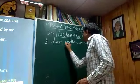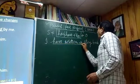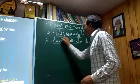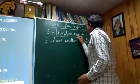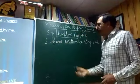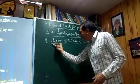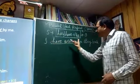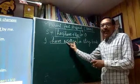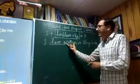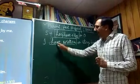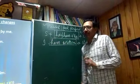In 'I have written,' we identify 'have written' — have is the auxiliary and 'written' is the third form of 'write': write, wrote, written. We use 'have' with 'I' because 'have' is the plural or first-person form.